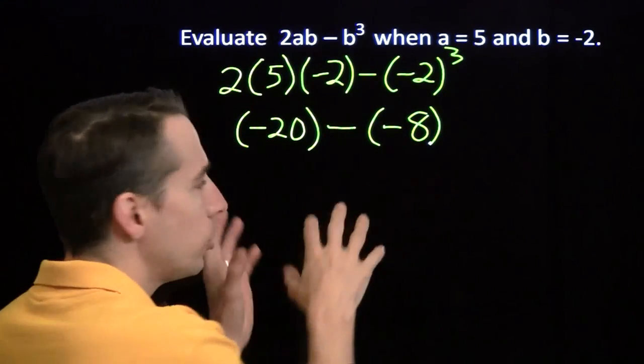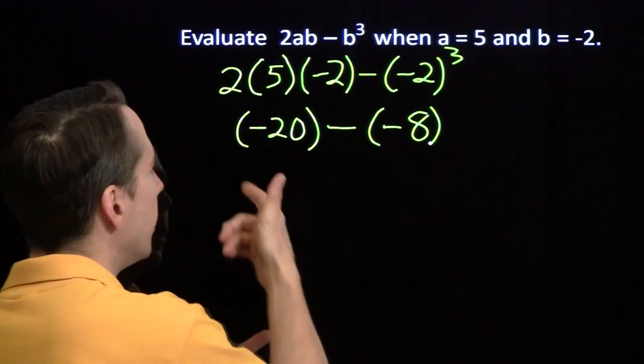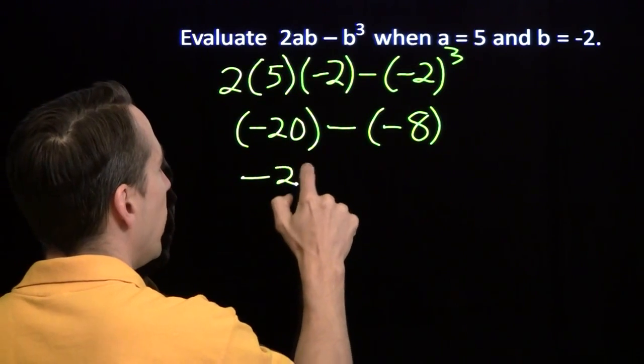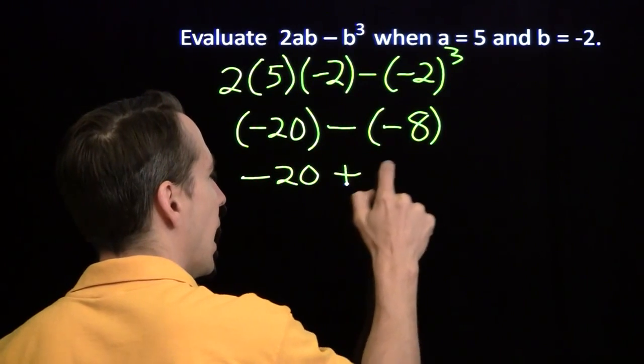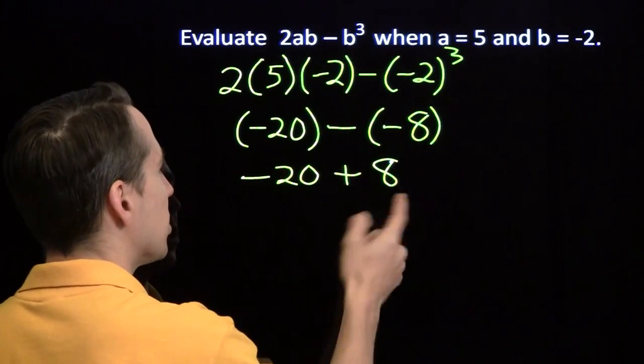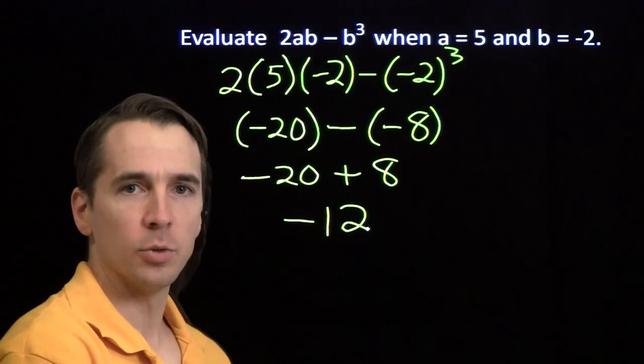See, once again, I'm including all my parentheses here. Parentheses are your friends. So we have negative 20 still, and a minus a negative 8. That's the same thing as adding 8. Minus 20 plus 8 gives us negative 12.